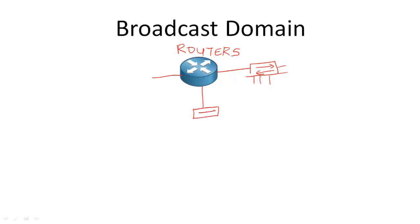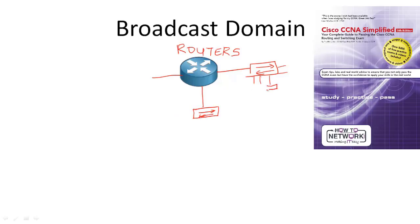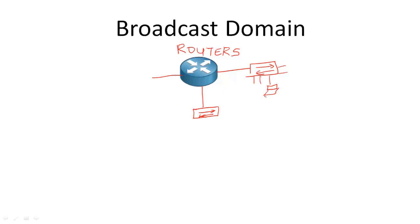If you connect a switch to one interface of the router and another switch to another interface, a broadcast sent by a device on one switch will be contained only to devices connected to that switch — it will not reach devices connected to the other switch. This is because the broadcast domain has been segmented. One reason why we segment broadcast domains is for security: if one system is attacked with a virus, the virus can affect all the other systems in that broadcast domain, but once segmented by a router, the virus will be contained within that broadcast domain.